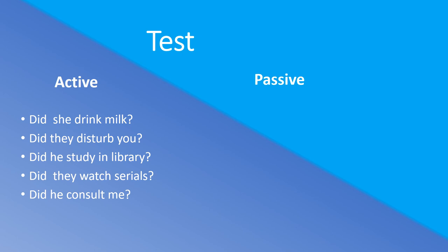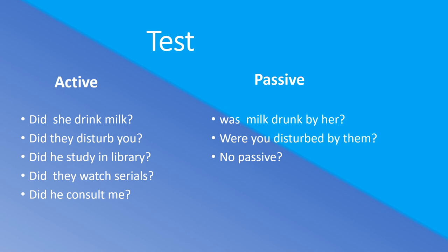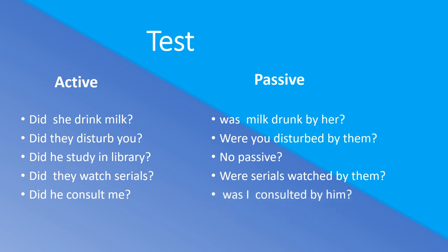Question Type 1 test sentences — all starting with 'did,' verb in the first form. Try. 'Did she drink milk?' → 'Was milk drunk by her?' 'Did they disturb you?' → 'Were you disturbed by them?' 'Did he study in the library?' → No passive voice — there is a preposition 'in' before 'library.' 'Did they watch serials?' → 'Were serials watched by them?' 'Did he consult me?' → 'Was I consulted by him?'